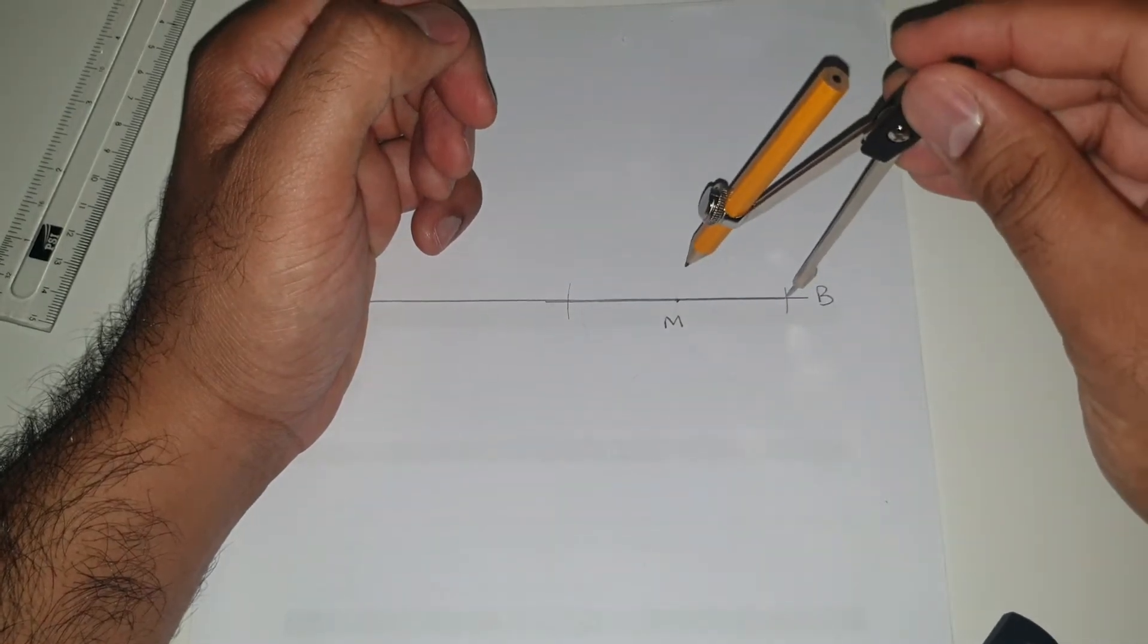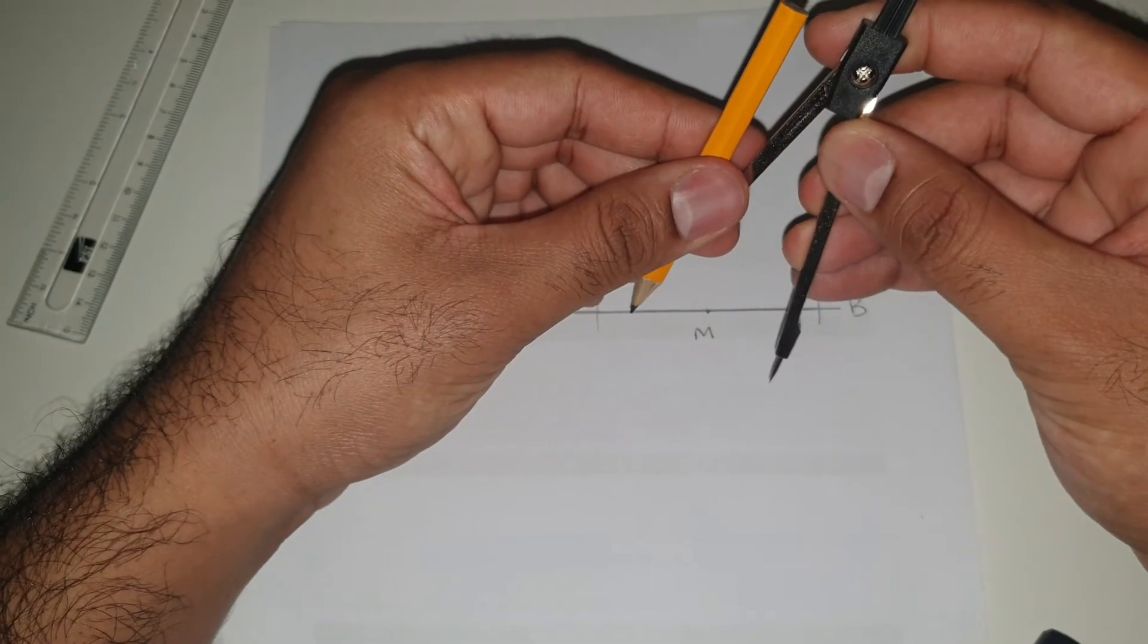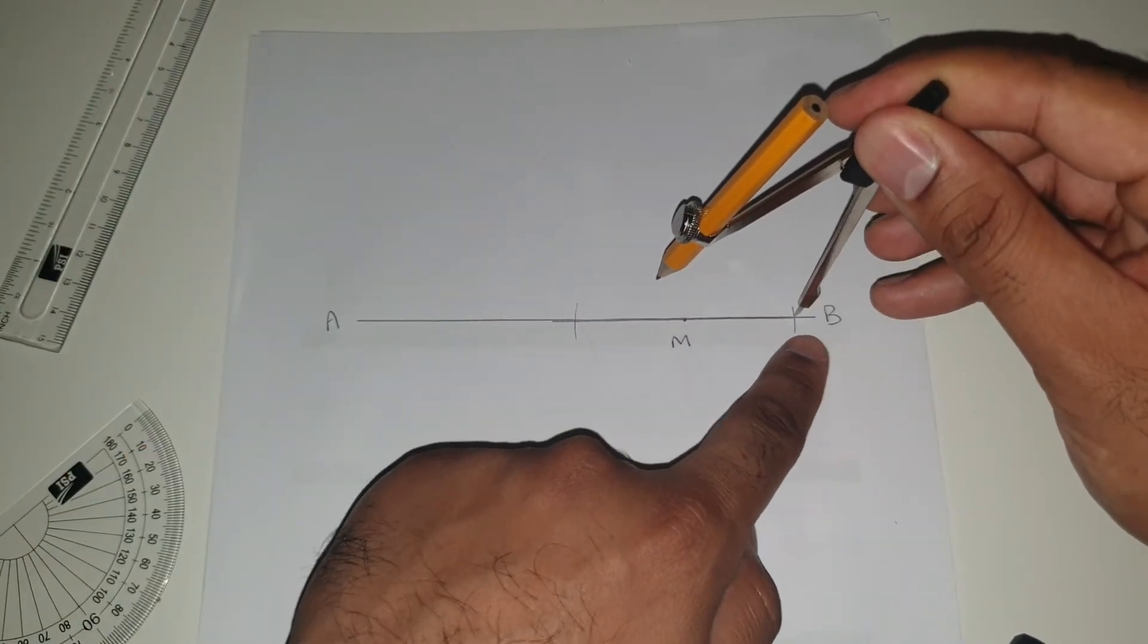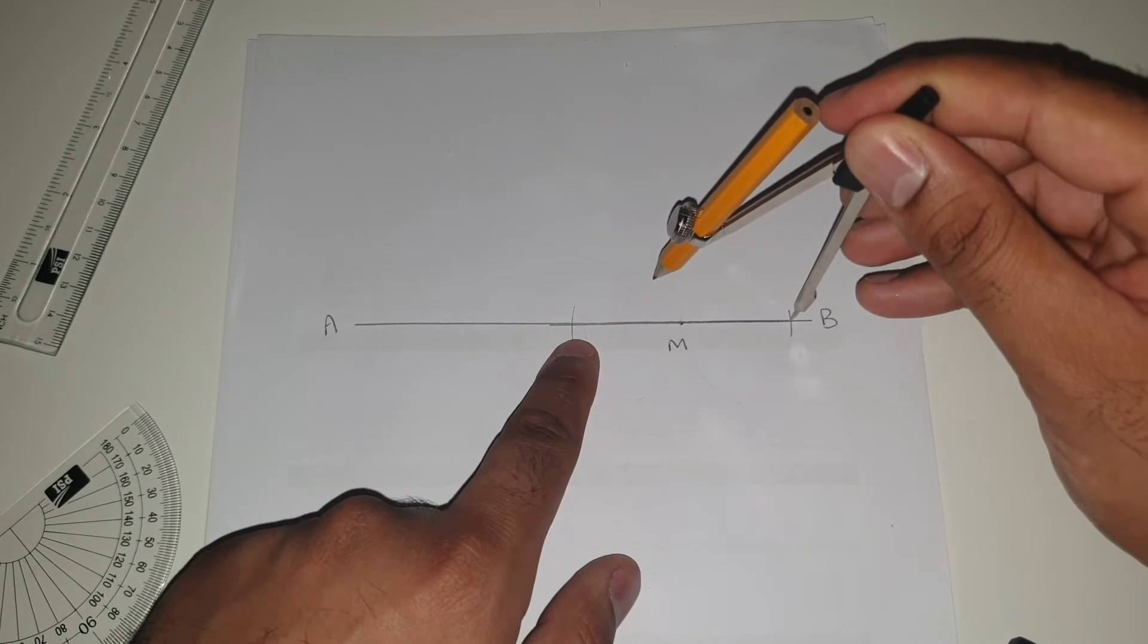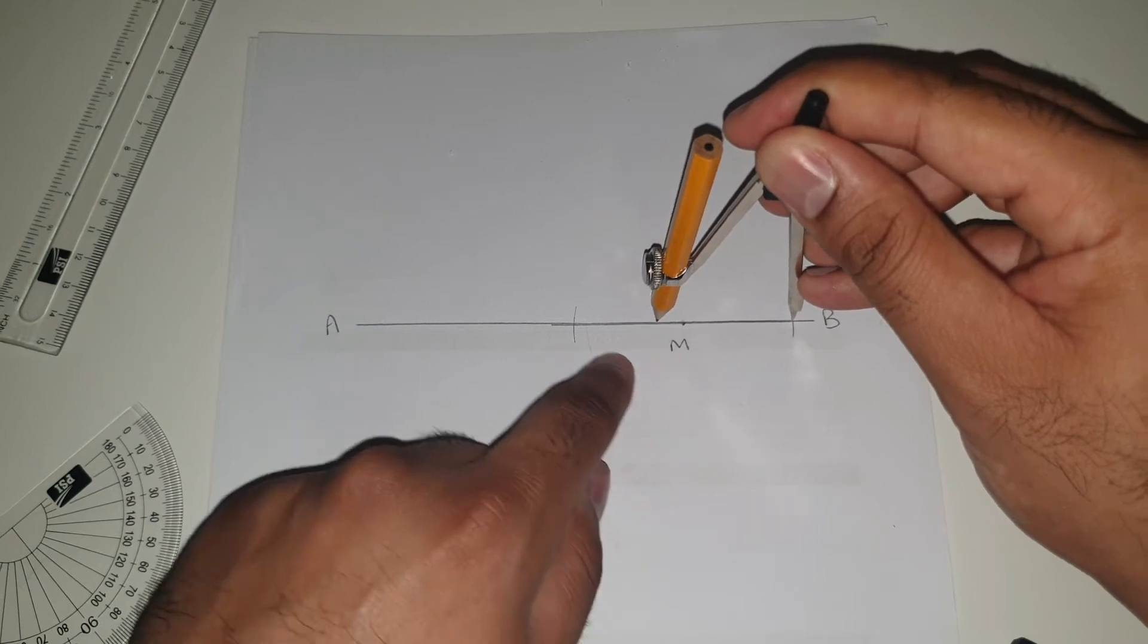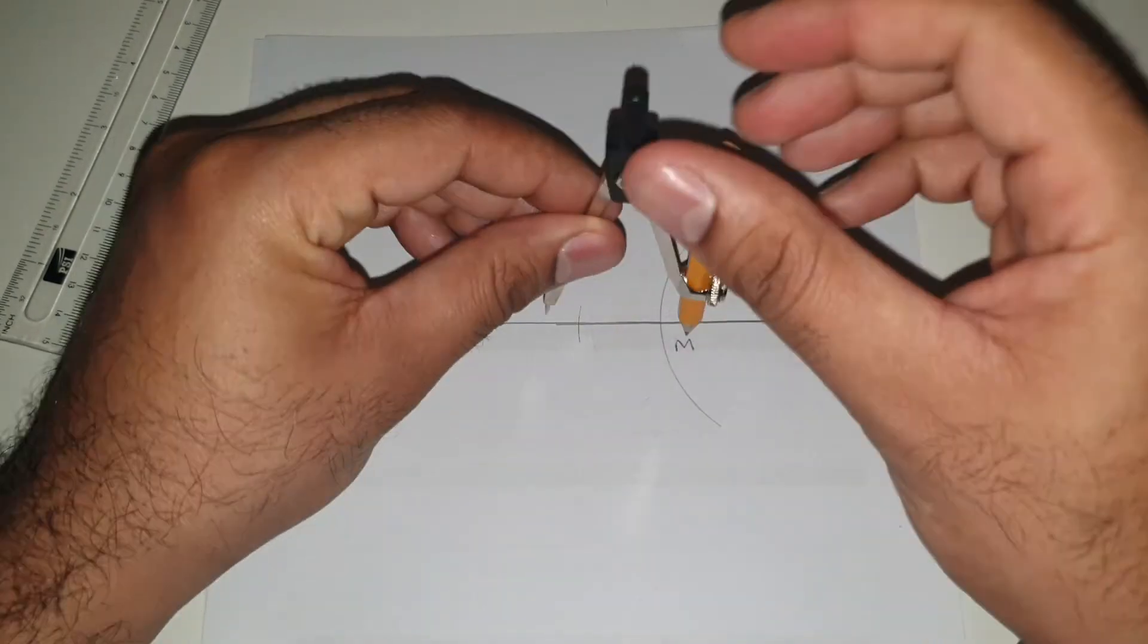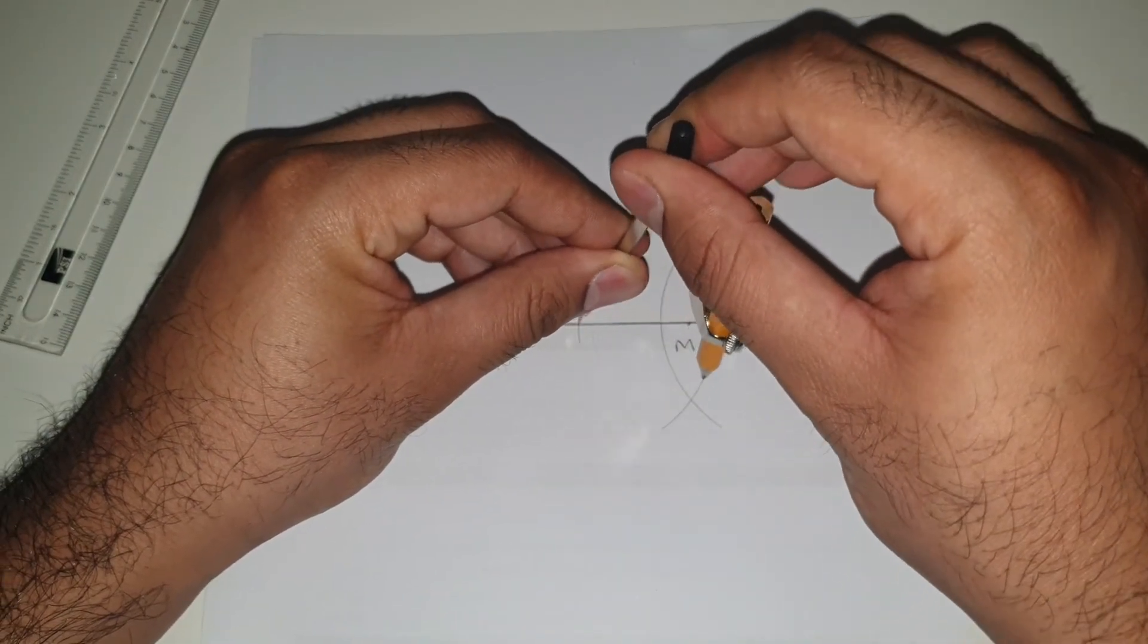And then what we're going to do is take our compass again, extend it just a little bit so it's a little bit bigger. And we are going to go from this point now. So you can consider this as being the new B and this being the new A. So we need to go over halfway. M is halfway. We just need to go past it. So we're going to draw a third of a circle. And again from the other point which you can consider as the new A.